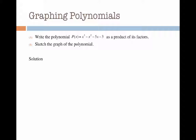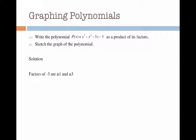Let's write the polynomial as a product of its factors. We begin by working out the factors of the constant minus 3. This will give us some values to substitute into p of x in order to find an answer of 0. Remember the remainder theorem: any value of x that gives us an answer of 0 will be a factor. So the factors of minus 3 are plus or minus 1 and plus or minus 3. If we substitute in minus 1, we get an answer of 0.